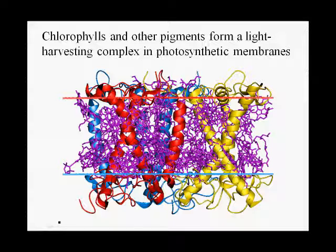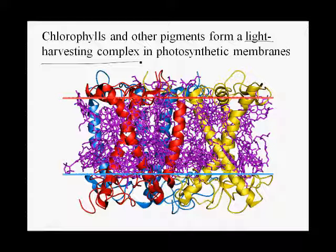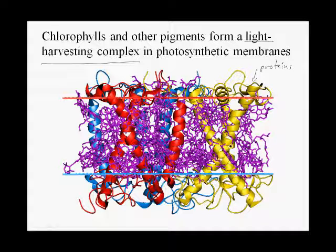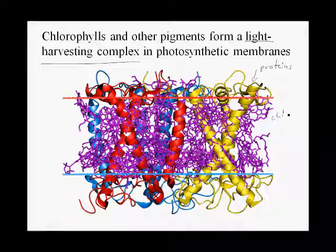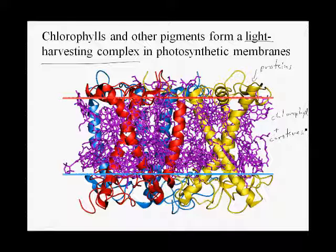This is a diagram or structural model of a light harvesting complex. A light harvesting complex is a membrane structure that consists of both proteins — here we have polypeptide chains with transmembrane domains. The transmembrane domains are alpha helices located in the lipid bilayer, and they're associated with lots of pigments: chlorophylls and carotenes. Hundreds of chlorophyll molecules and carotene molecules are associated with proteins in a light harvesting complex, all located in membranes.